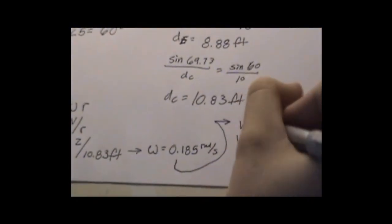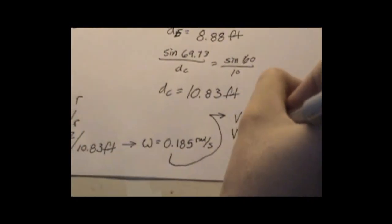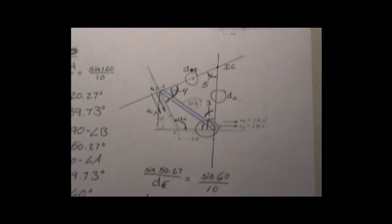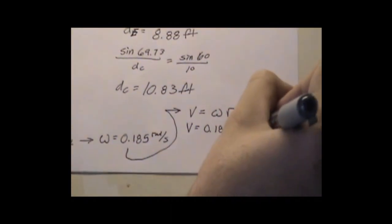Using this at point A, we get velocity equals omega R. Velocity equals omega, which is the 0.185 times the distance to the IC from point A, which is distance DE, as 8.88 feet.